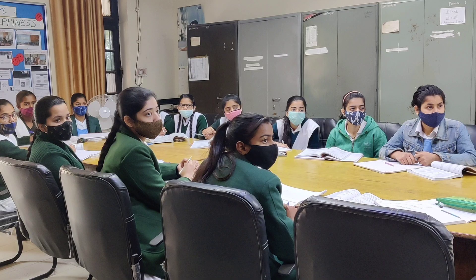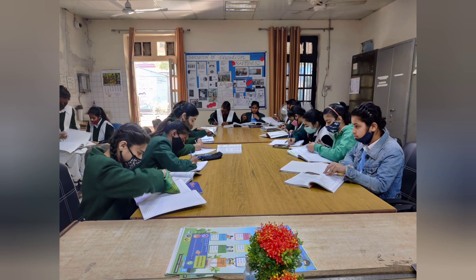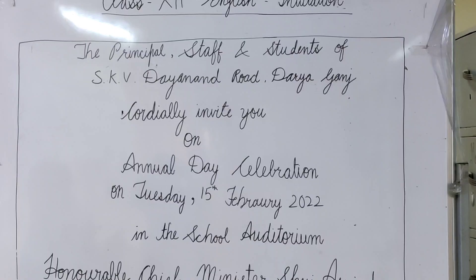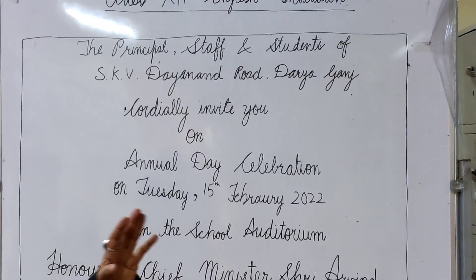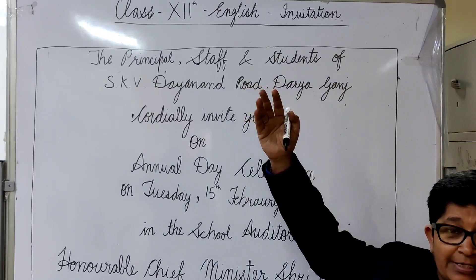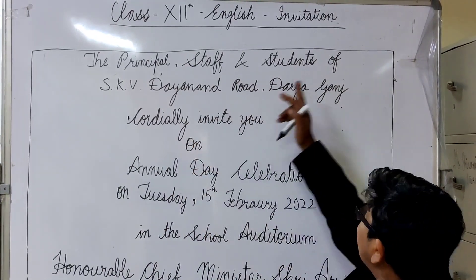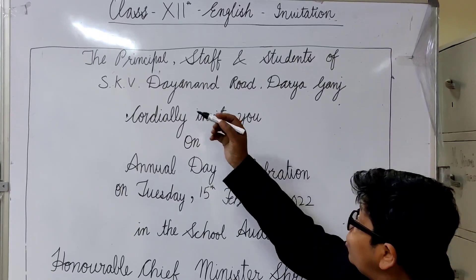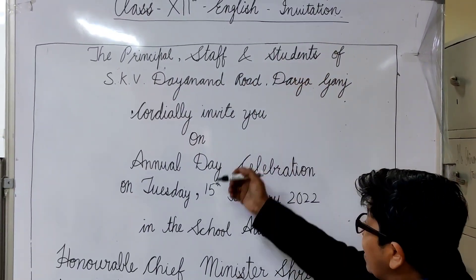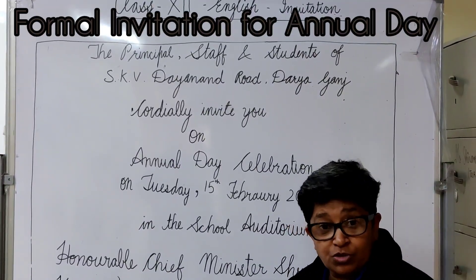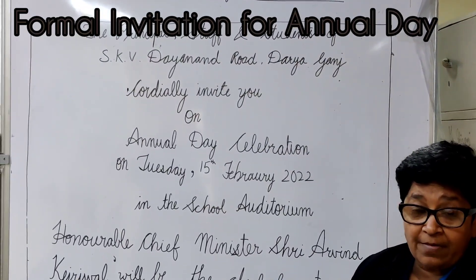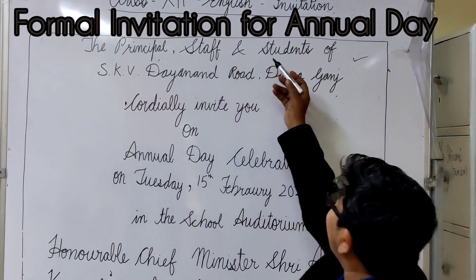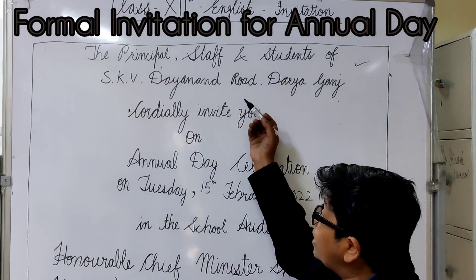This is a formal invitation for a marriage party — we learned how to start, what are the things, and how to change them. For a sports function in our school, if we have a formal invitation, we will write it in the same format: 'The principal, staff and students of SKV, Dianna, Rodeo' — so whatever the name of your school.